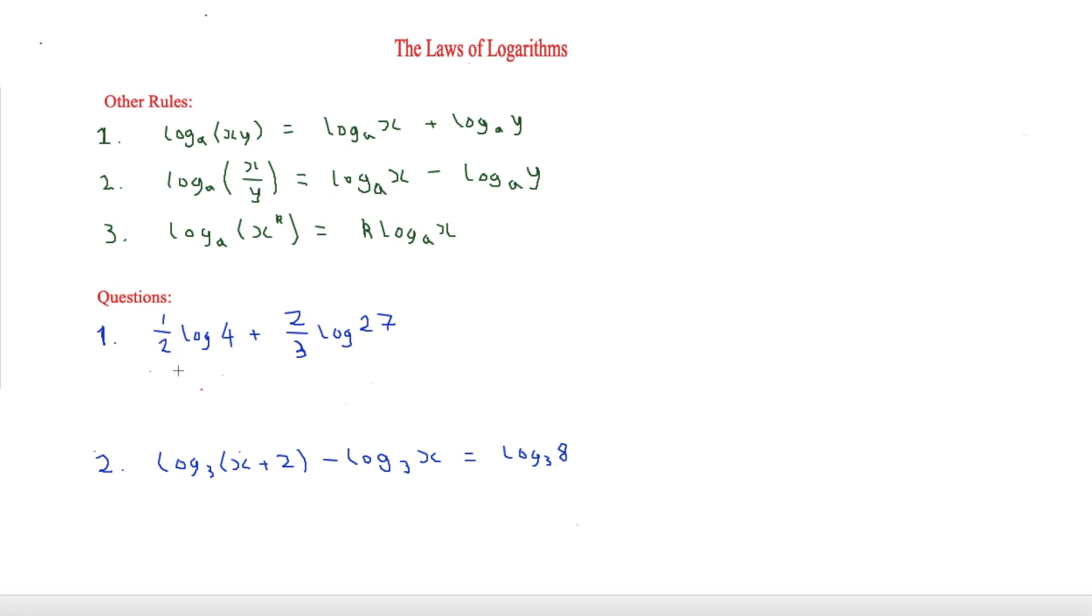The first one here we want to make into one single logarithm. We'll use rule number three—the half here is k, so we can put half to the end and make it a power, which gives us log of four to the half. As there is no base, you assume it's ten. Four to the half is two, so we get log two.